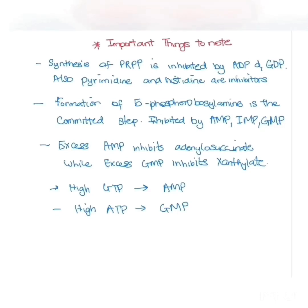The committed step of the reaction is the formation of 5-phosphoribosylamine. If there are high levels of AMP, IMP, and GMP, it will be inhibited. This acts as a protective factor preventing the overproduction of these molecules.